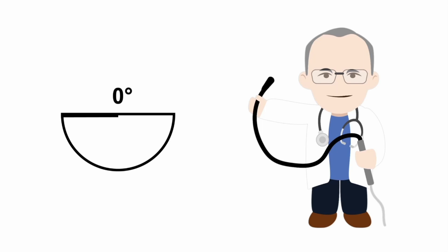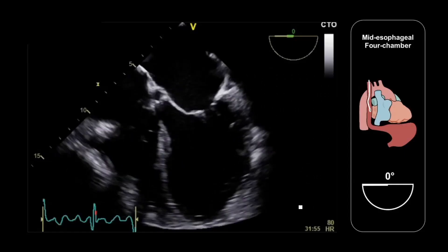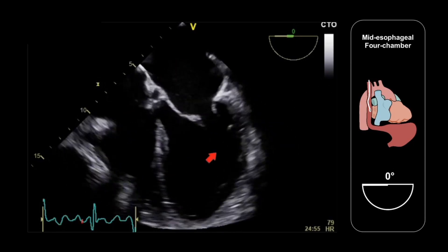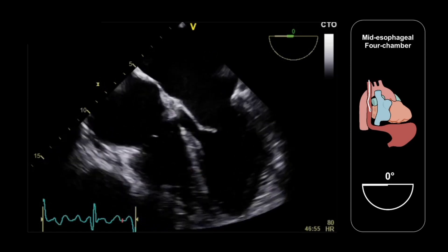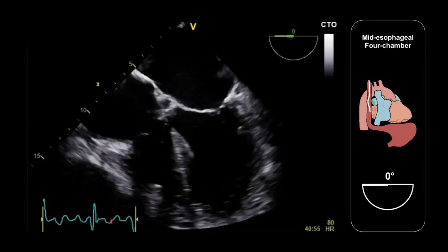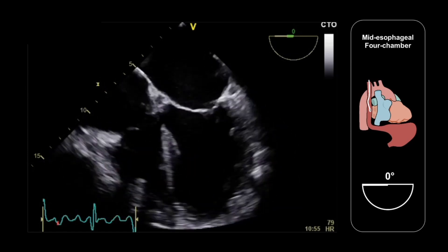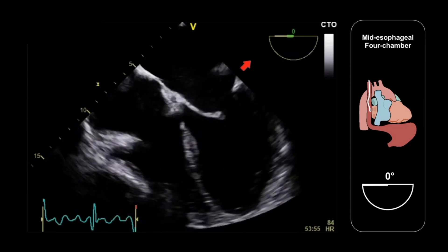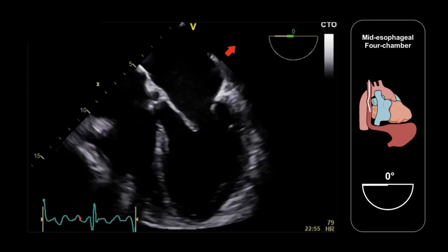This may require some optimisation to avoid any foreshortening, but the optimal four-chamber view is normally found somewhere between zero and twenty degrees. Here we have the mid-esophageal four-chamber view, with both atria and both ventricles clearly in the image. The left upper pulmonary vein that we're looking for is located just off the edge of the sector, here, adjacent to the left atrium.